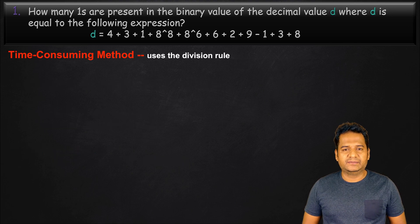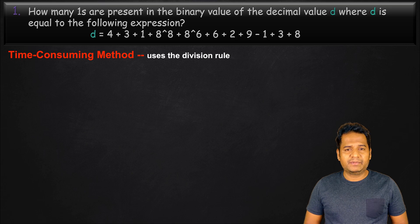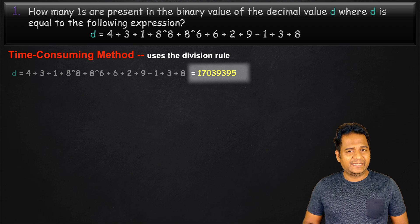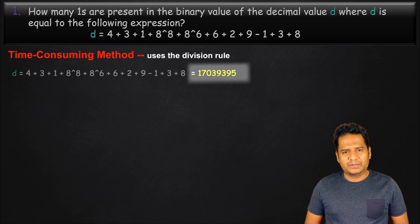Let's look at the first method. In the time-consuming method, first we would compute the value of d which is 17039395, a quite large number.